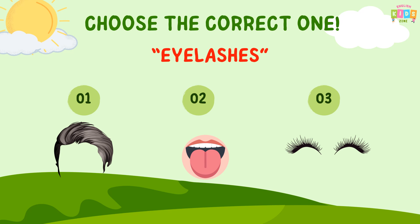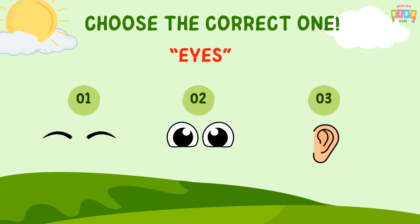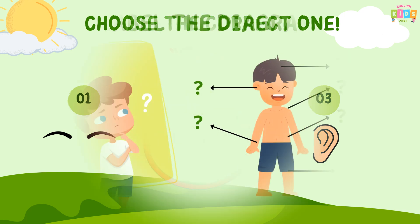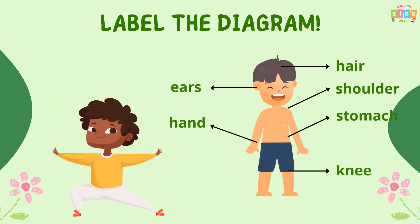Now that we have studied these things, let's do some exercises. You have to listen to me and choose the correct one. Let's start: eyelashes, teeth, eyes. Label the diagram and then we will check the answer together. Let's check which labels are correct.